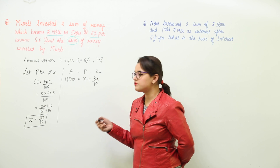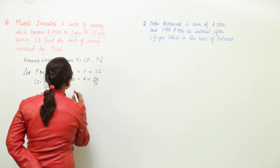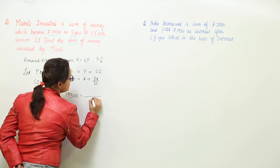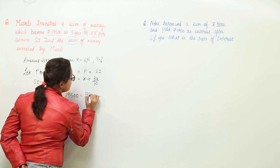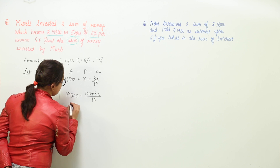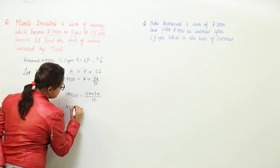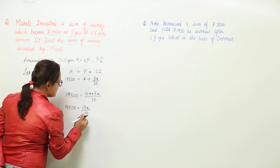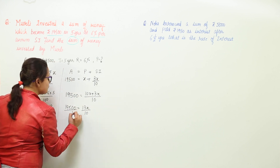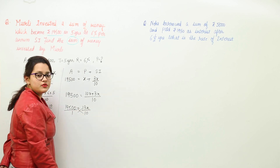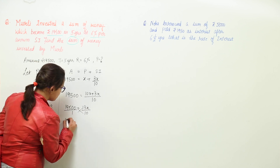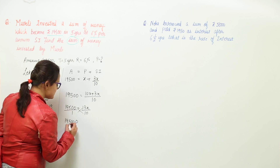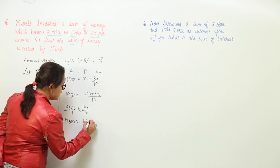Solving this equation further: taking the LCM gives 10x + 3x, so 19,500 = 13x/10. Cross-multiplying, we get 19,500 × 10 = 13x.